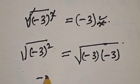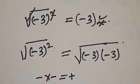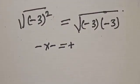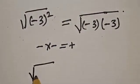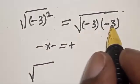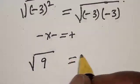Now, the negative times negative, this is equal to plus. Then we have square root of minus 3 times minus 3 - that will be 9. Then this is equal to